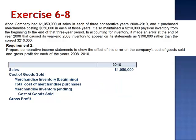In 2010, sales of $1,050,000 minus cost of goods sold: the beginning inventory is correctly stated at $210,000, plus purchases of $650,000, brings us to $860,000, less ending inventory of $210,000, giving cost of goods sold of $650,000 and the correct gross profit of $400,000.